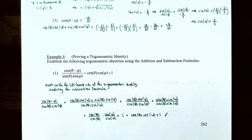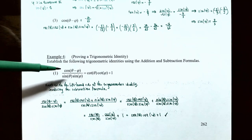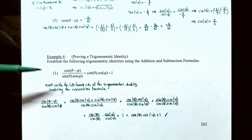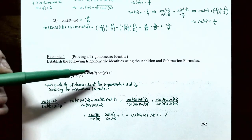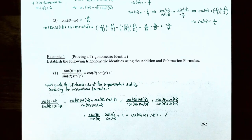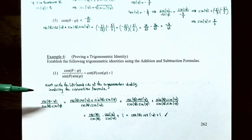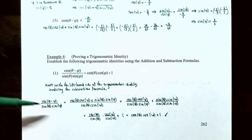Example four: proving a trigonometric identity. Establish the following trigonometric identities using the addition and subtraction formulas. Number one, we're going to prove this identity: cosine of theta subtract phi, divided by the quantity sine of theta times sine of phi, is equal to cotangent of theta times cotangent of phi plus one. We're going to start with the left-hand side because it involves the subtraction formula for the cosine function.